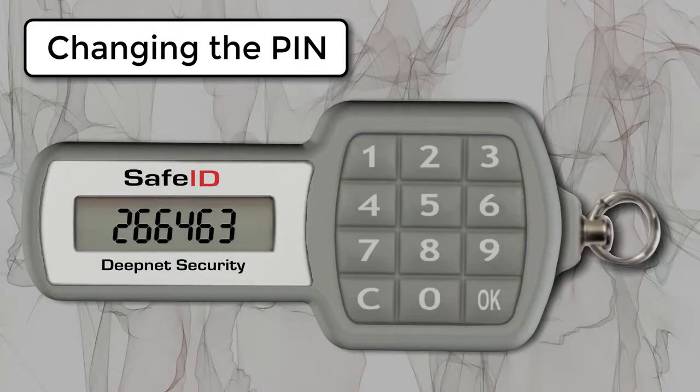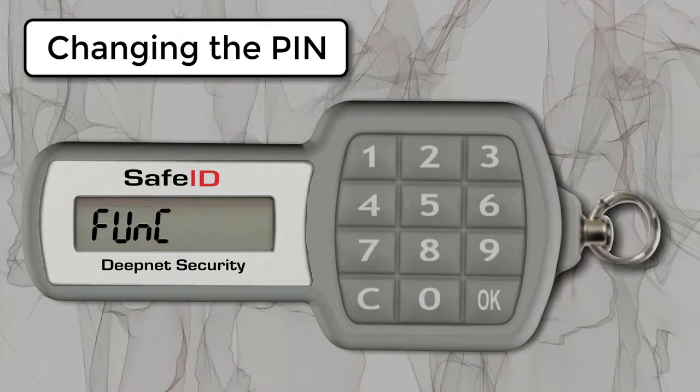To enter the Functions menu, we press C. A new PIN can now be supplied by pressing 0. We now enter our 4 to 8 digit PIN code.